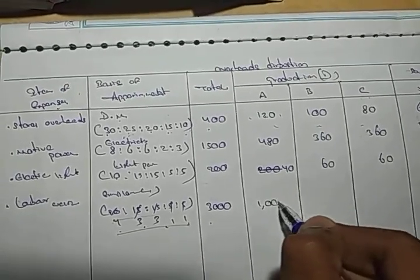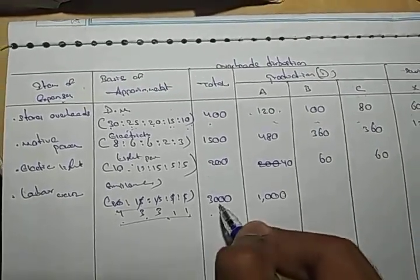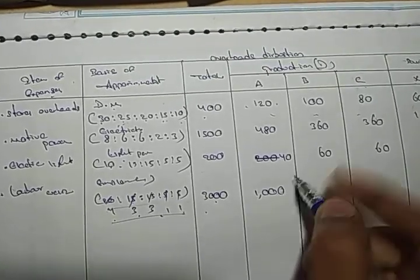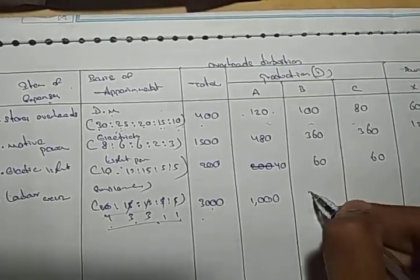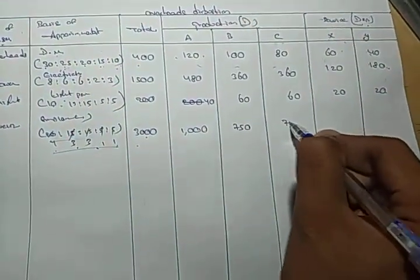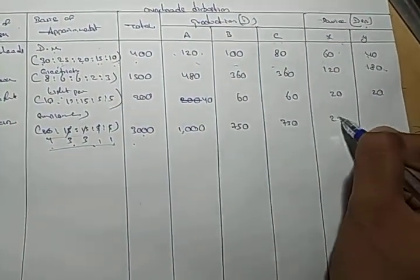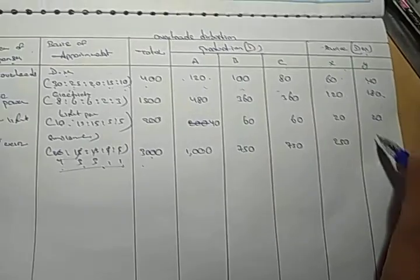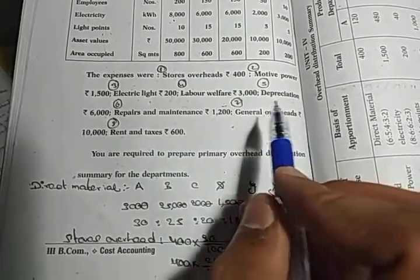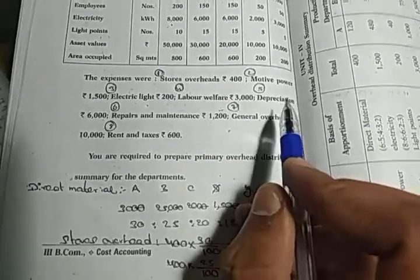3000 into 4 divided by 100 means 1000. Next 750, next 320, next 750, next 250, next 250. Labor welfare completed. Now depreciation 6000.